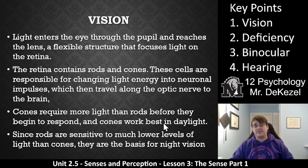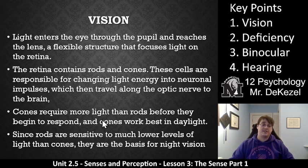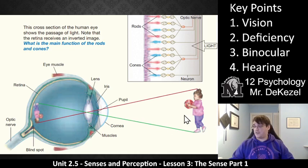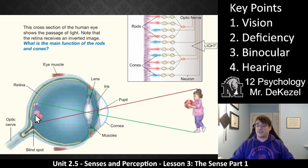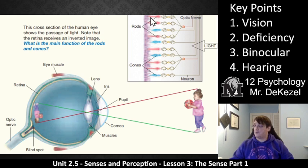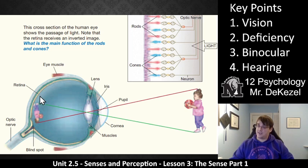Cones require more light than rods before they begin to respond, so they work in daylight. The rods are more sensitive and are the basis for night vision. You have a lot more cones than rods, so you see better during the day than during the night. The light goes into the eye and appears on the back of the retina where the rods and cones are. It is actually an inverted image, so your brain flips it around for you — everything you are seeing is inverted, but your brain corrects it. The retina catches the light and turns that into information that the brain can actually perceive, sending it down your optic nerve.